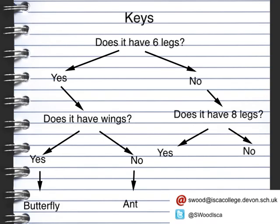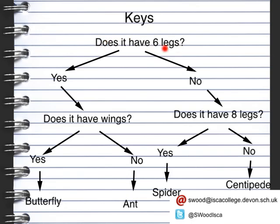The next question we're asking is: does it have eight legs? Again, we've got the very simple yes or no answer. If we go down yes, then it could be a spider. If we go down no, then it could be a centipede. We can get keys really quite complex with lots of different variations in the questions and answers. Obviously, if it does have eight legs, it might not necessarily be a spider — it could be any type of arachnid, which is the group or family the spider belongs to. This one could also be a millipede, but we've got the idea of very simple questions with very simple answers to identify our organism.